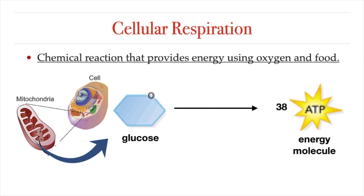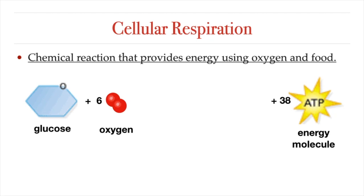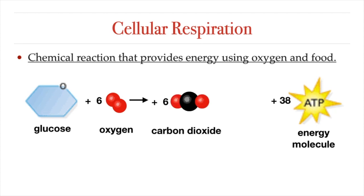So when we eat, we provide our cells with the glucose they need to make ATP. But we need to breathe, because our cells cannot fully convert the energy in glucose into ATP without oxygen gas. Cellular respiration requires oxygen. The reactants of cellular respiration are glucose and oxygen. And the products, besides ATP, are carbon dioxide and water. The water can be used by the cell, but the carbon dioxide gas cannot, and needs to be removed out of the body, which we do when we exhale.